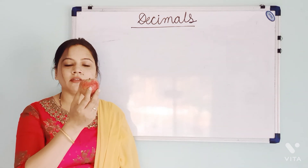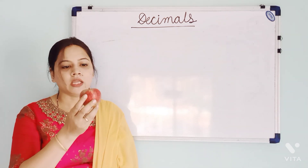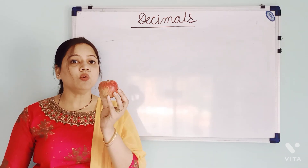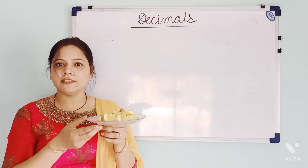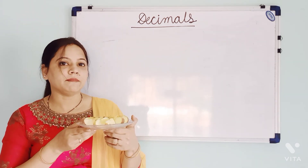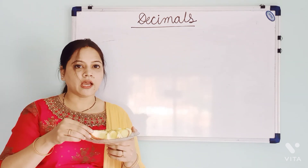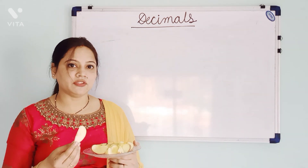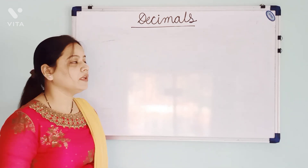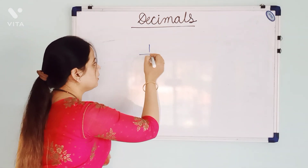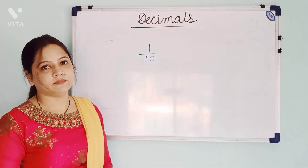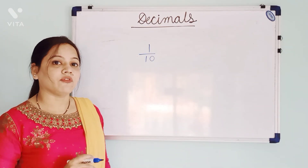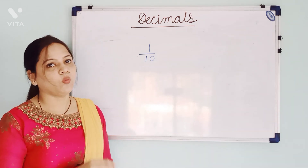What is in my hand? An apple. Now, suppose I will cut this apple into 10 pieces. I cut the apple into 10 pieces. Now, if I will just eat this part, then how much I am eating? I have eaten 1 tenth of an apple. 10 pieces are there and from that 10 pieces, I have eaten 1 piece.